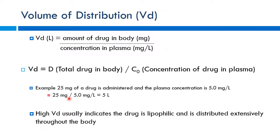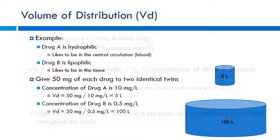THC has a very high volume of distribution and is very lipophilic — it loves being out in the tissues. Volume of distribution is an apparent volume. The question is: how much volume would I have to dissolve this drug into to get the same concentration I actually measure in the patient's blood? Consider two drugs: Drug A is hydrophilic, Drug B is lipophilic. Drug B will have the higher volume of distribution because it can cross membranes easily and likes to be in tissues, while Drug A stays in the systemic circulation.